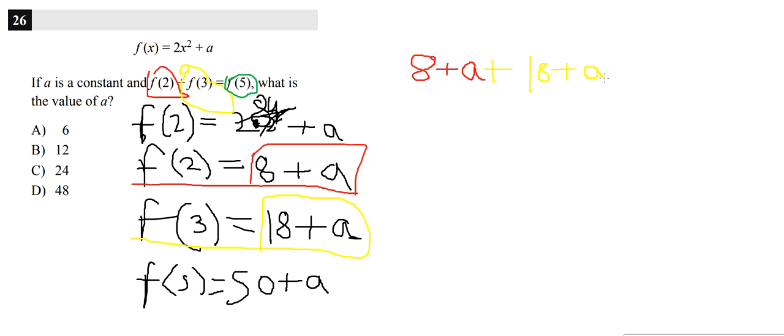Because, as you can see, it's F of 2 plus F of 3 equals F of 5. So I'm just plugging in the value of F of 2, which we solved for, by plugging in into the equation. So then that equals 50 plus A.